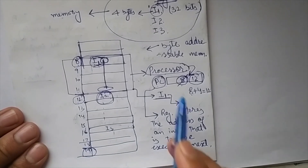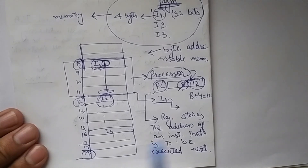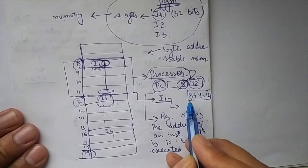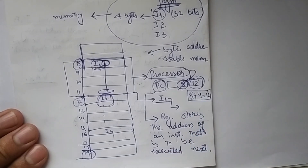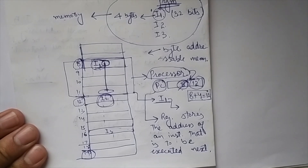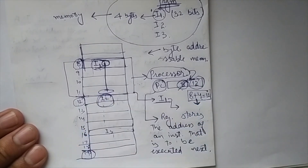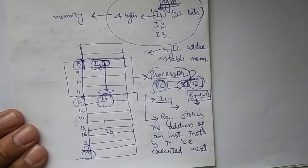The program counter is updated after each instruction is executed. The general update rule is: PC = current PC + 4, for 32-bit instructions on byte-addressable memory, in the case of sequential execution. However, if there is a branch instruction, the program counter update depends upon the branch target address.